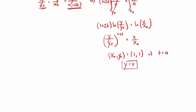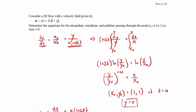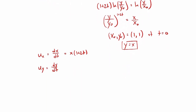Now let's do the streak line. To find it, we use that the x-velocity is dx over dt and the y-velocity is dy over dt. Remember, a streak line connects all the fluid particles that have passed through the same point in space at some previous or future time. Our x-velocity component is x times (1 plus 2t), and our y-velocity component is just y. So we now have two differential equations to solve.